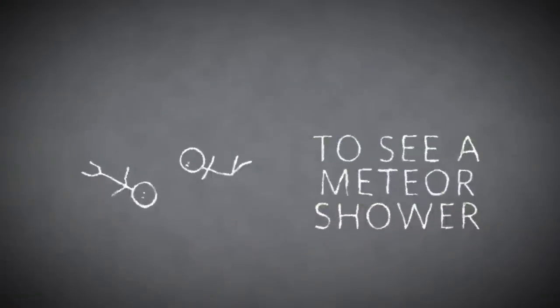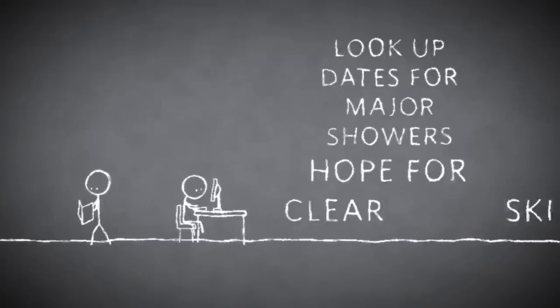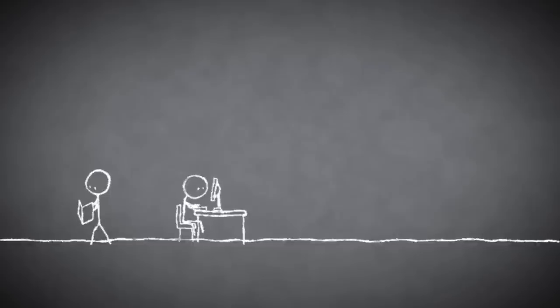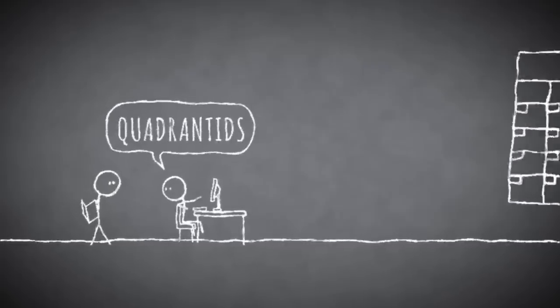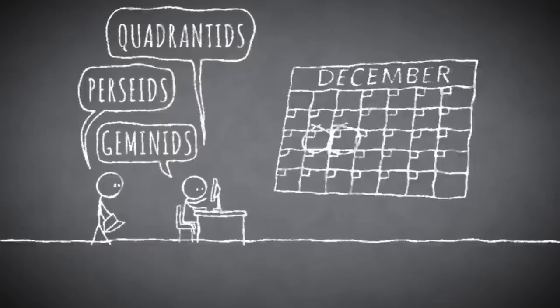To see a meteor shower, first look up the peak dates of the major showers and hope for clear skies. Good displays to keep track of are the Quadrantids in January, the Perseids in August and the Geminids in December.